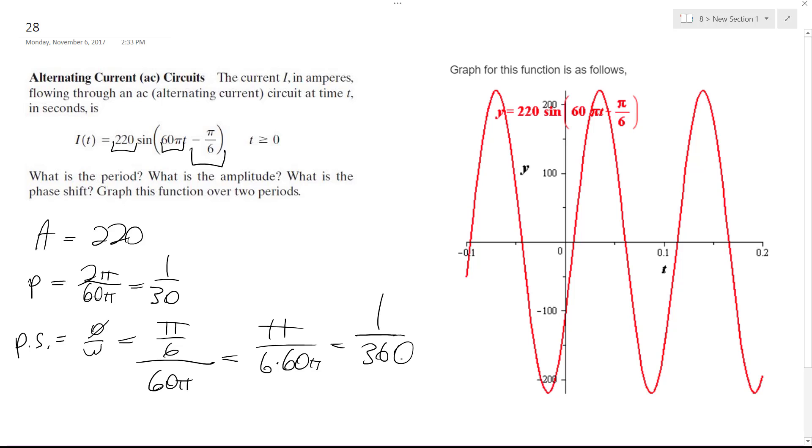So this is going to shift to the right, 1 over 360. And then it's got a time period of 1 over 30 and amplitude of 220. All right, I hope that helps you out.